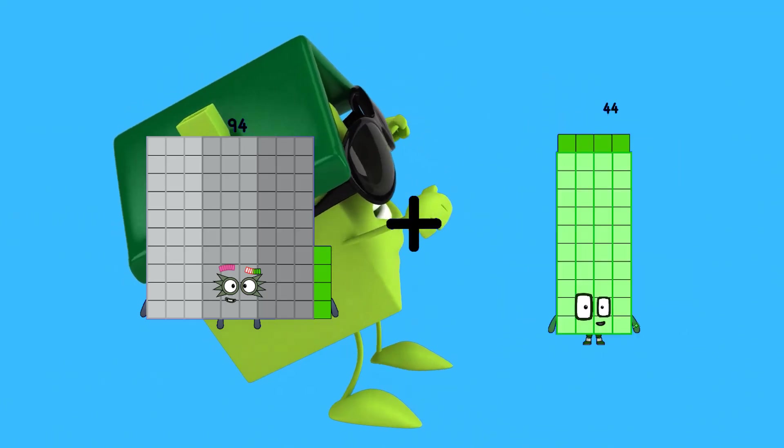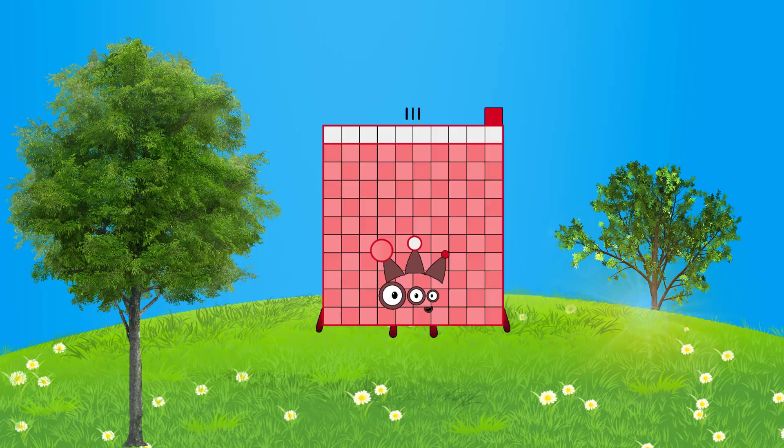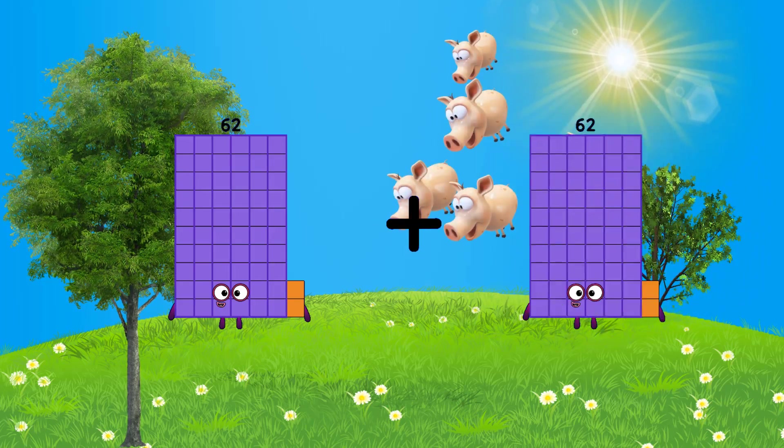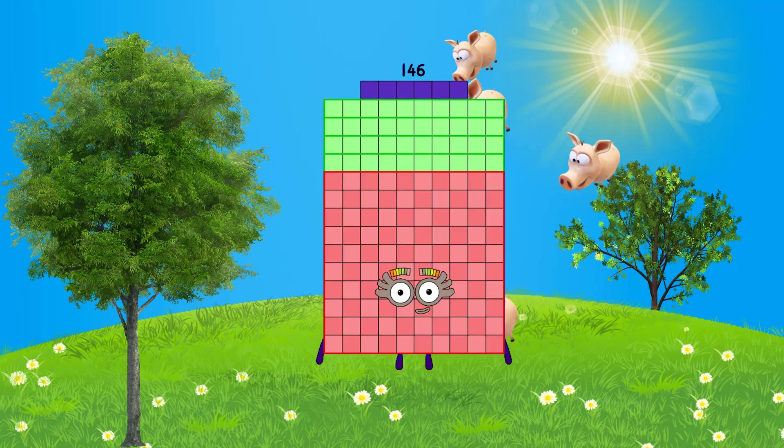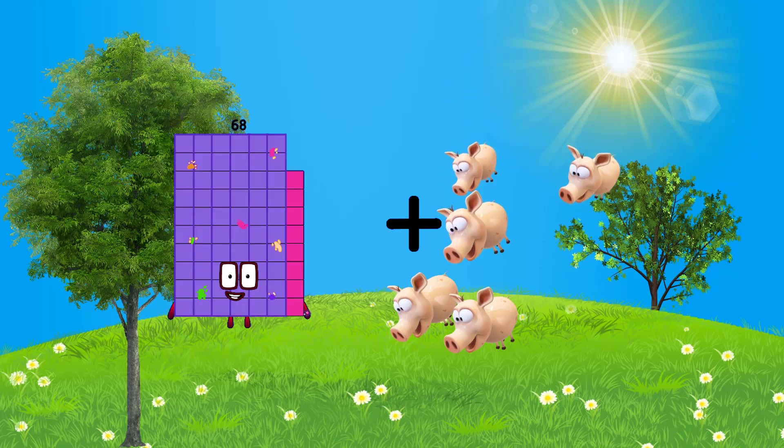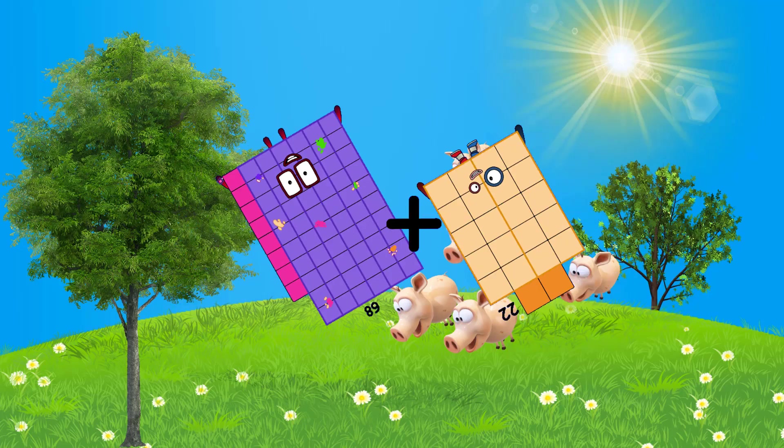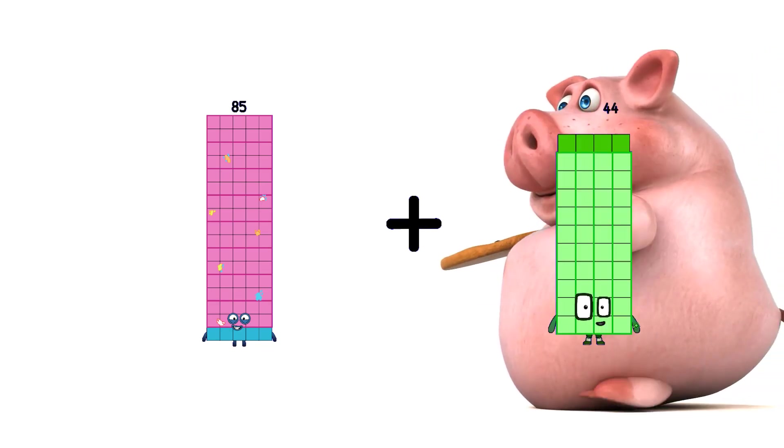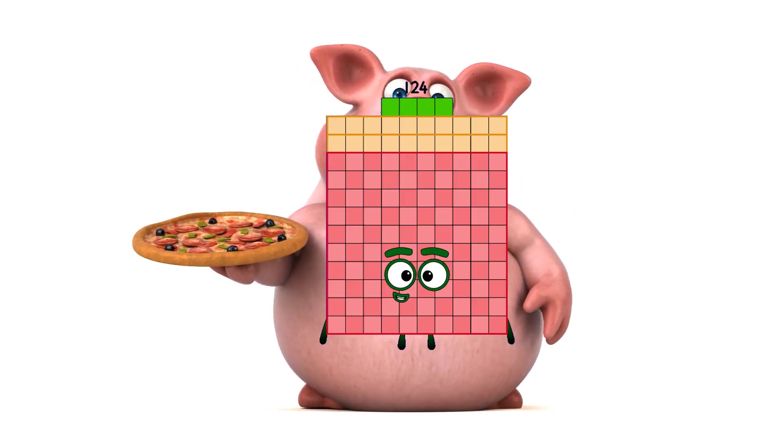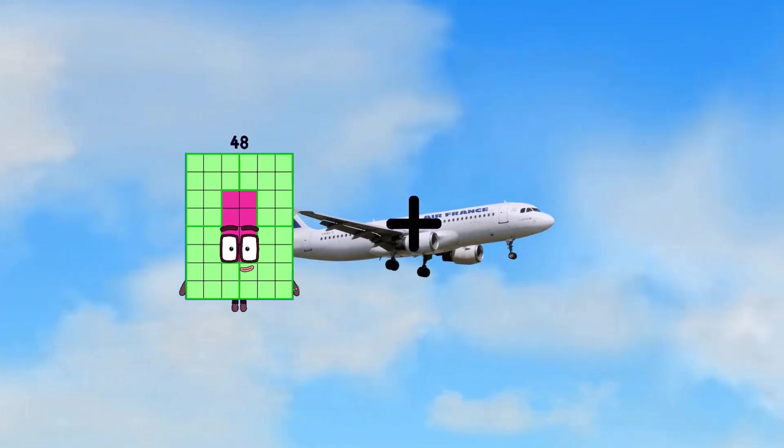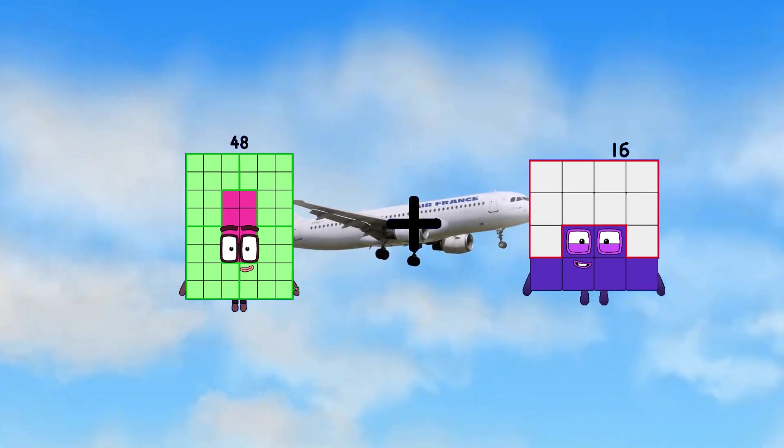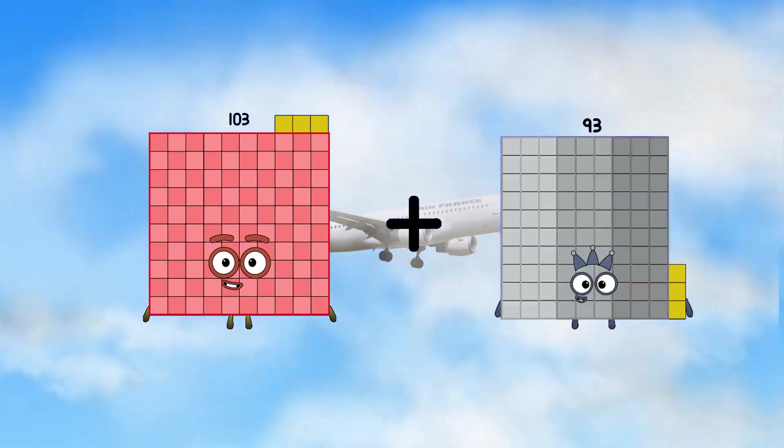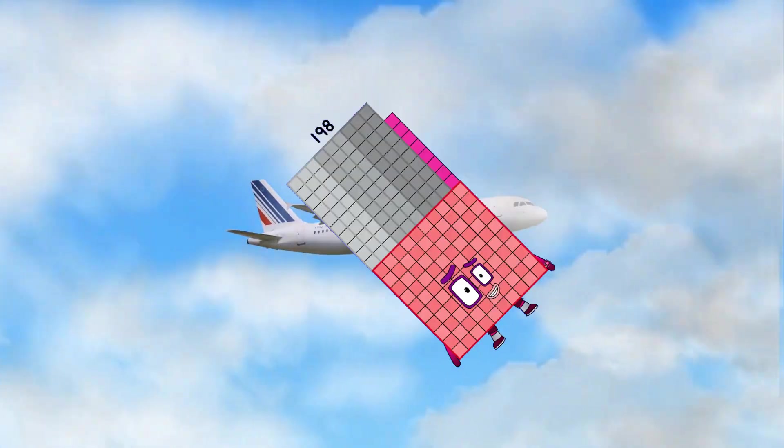94 plus 70 equals 164. 62 plus 84 equals 146. 68 plus 22 equals 90. 85 plus 39 equals 124. 48 plus 16 equals count. Certified Calais plus 148.